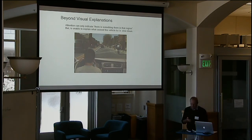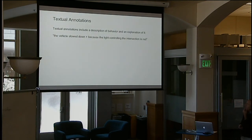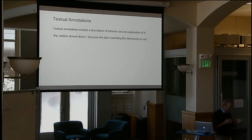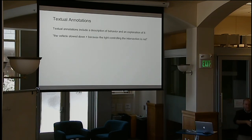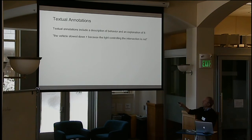We really wanted textual explanations. We'd like to produce first a description and then an explanation of what's happening, because an explanation without the context of what's being explained can often be confusing. So we always include a description of what the vehicle did and a corresponding explanation of why it did it.